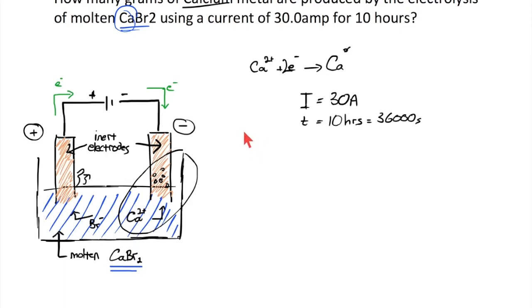I'm going to think about charge and how current is charge over time, or rather charge passing through a unit area over a certain amount of time, and thus how charge is equal to the current times the time. Taking these two numbers, the 30 times the 36,000 is going to give me 1,080,000 coulombs.